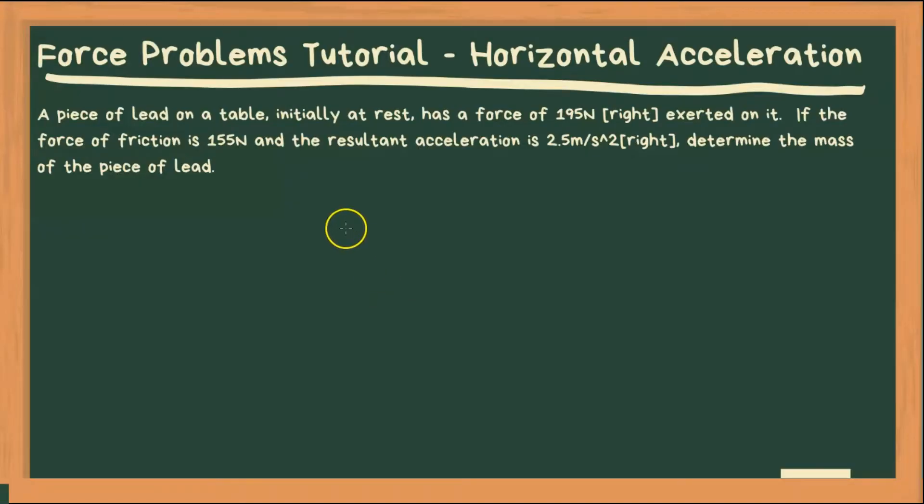Alright, so let's look at this problem. Here we have a piece of lead on a table, initially at rest, has a force of 195 newtons to the right that is exerted on it.